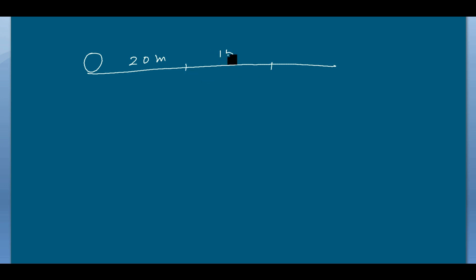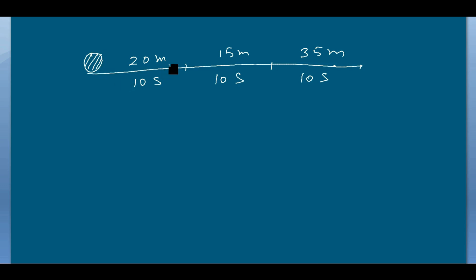We can also see it the other way: if an object covers unequal distances — say 20 meters in the first segment, 15 meters in the second, and 35 meters in the third — in equal time intervals of 10 seconds each, then the object also has non-uniform velocity. So either unequal distances in equal time, or equal distances in unequal time, gives non-uniform velocity.